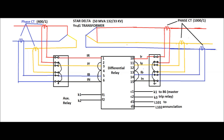In the case of a numerical differential relay, no ICTs are required for phase and amplitude matching — this is automatically done in the numerical algorithm. Only the relay current input from either side of the power transformer via the CTs is required, along with the rating data of the power transformer, the vector group of the power transformer, the HV and LV voltage rating, and the CT ratio of the HV and LV side.